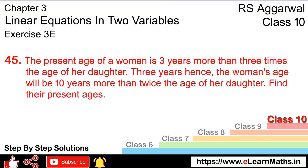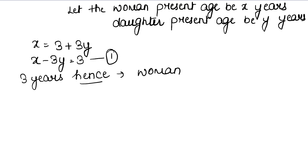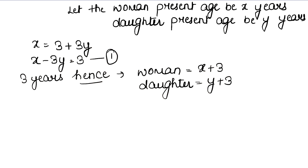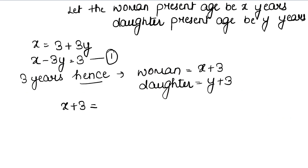Now, what is the second equation? 3 years hence — meaning after 3 years — the woman's age will be 10 years more than twice the age of her daughter.